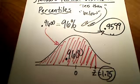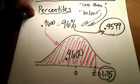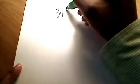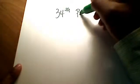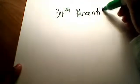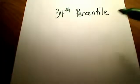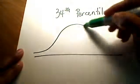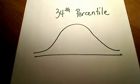Let's do one more percentile. How about I'm looking for the Z score that corresponds to the 34th percentile. What does that mean? That means that 34% of the data, 34% of the scores, are below yours.